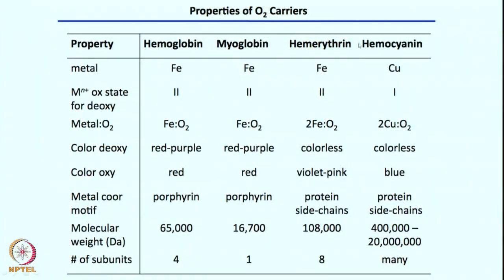We have hemoglobin and myoglobin. In addition, there is hemerythrin, which is responsible for oxygen carrying in marine invertebrates. There is also hemocyanin, involved in oxygen transport in arthropods and mollusks. You are likely familiar with hemoglobin and myoglobin. In marine invertebrates we have hemerythrin, and in arthropods and mollusks such as crabs, their blood can be blue — thanks to copper-oxygen chemistry.